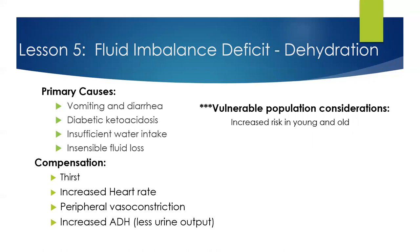Compensation mechanisms for dehydration — things your body does to try and improve the dehydration — include thirst, increasing the heart rate, peripheral vascular vasoconstriction, and increased antidiuretic hormone, which in turn will help slow urinary output. When patients are losing fluids, they may also lose electrolytes and proteins. Your vulnerable populations for dehydration include the very young and the very old.